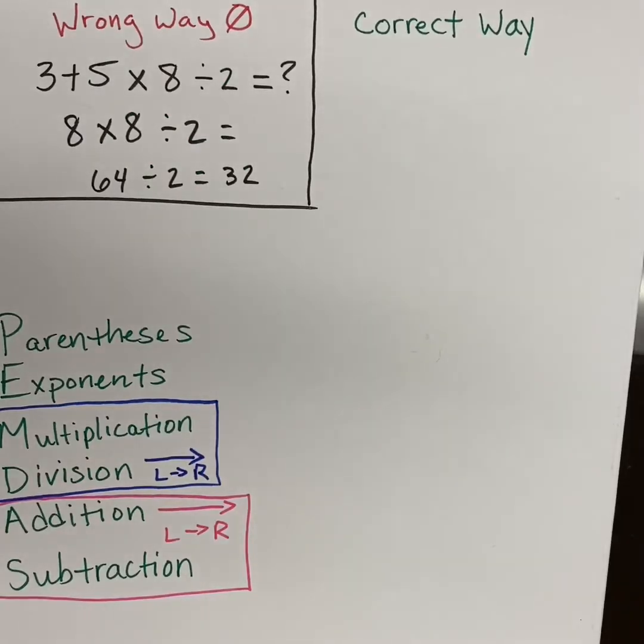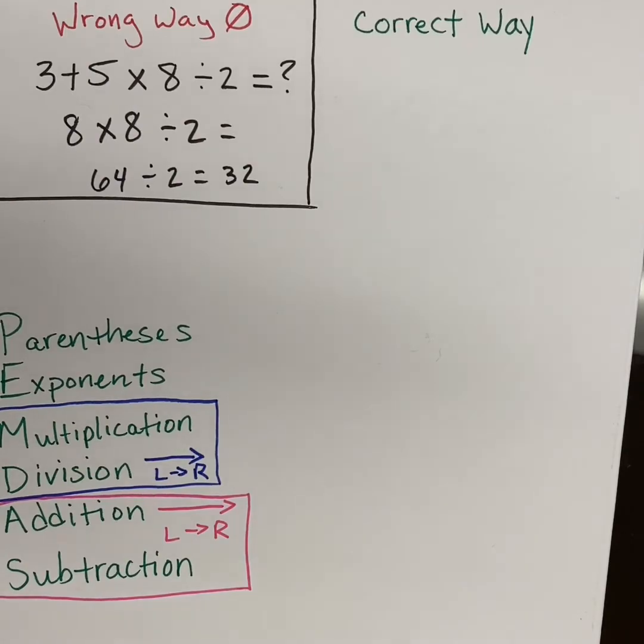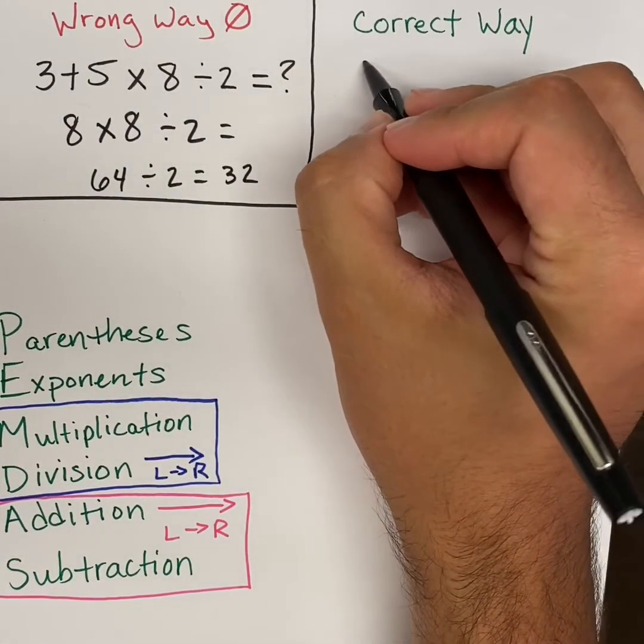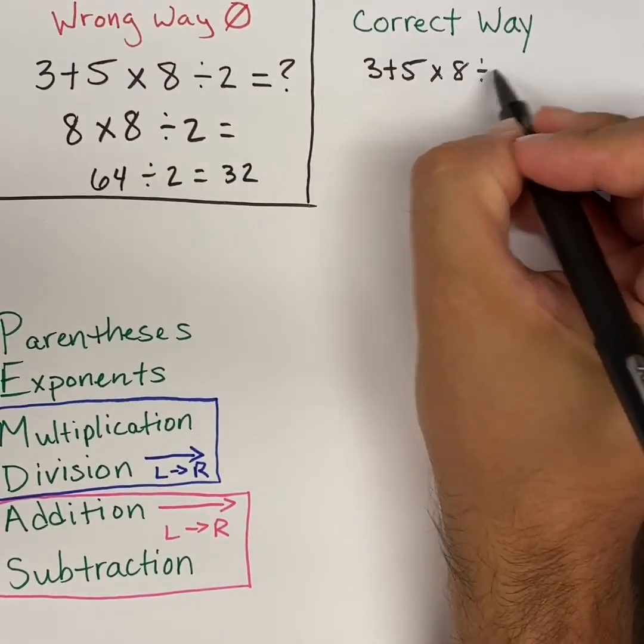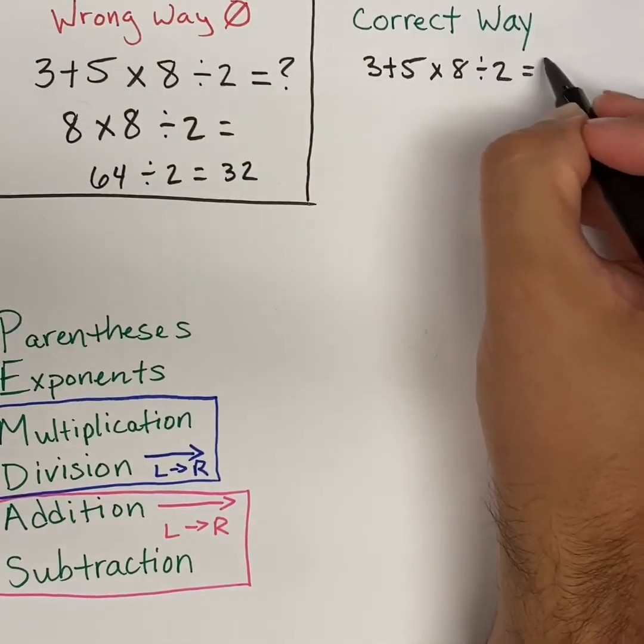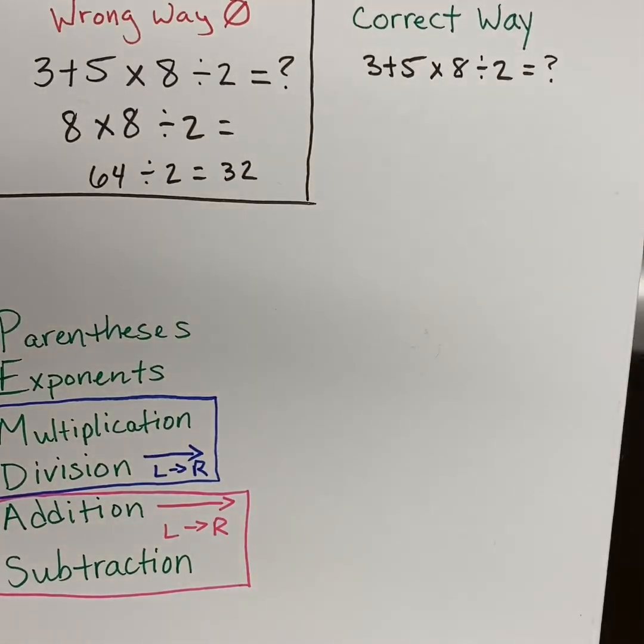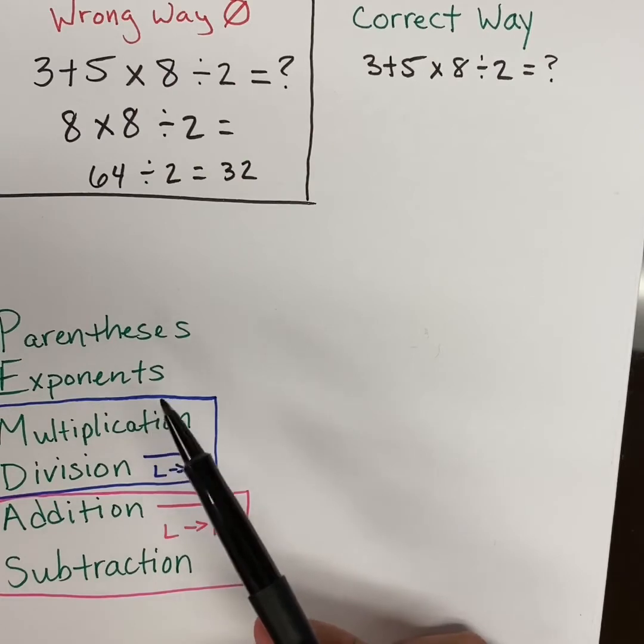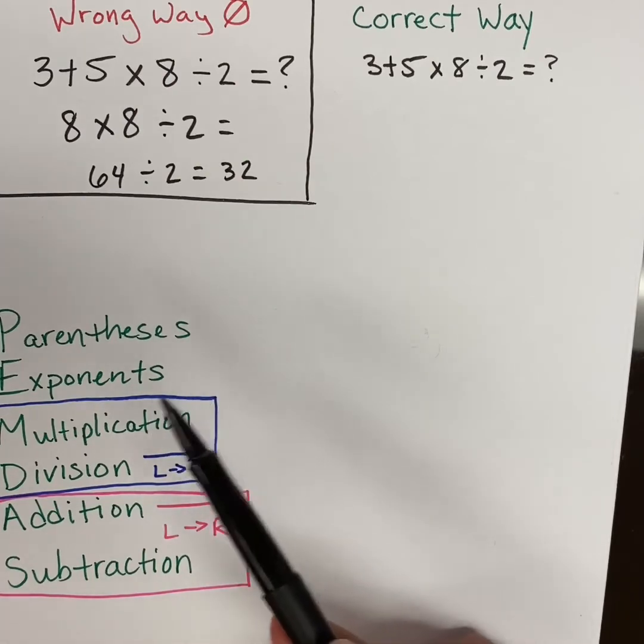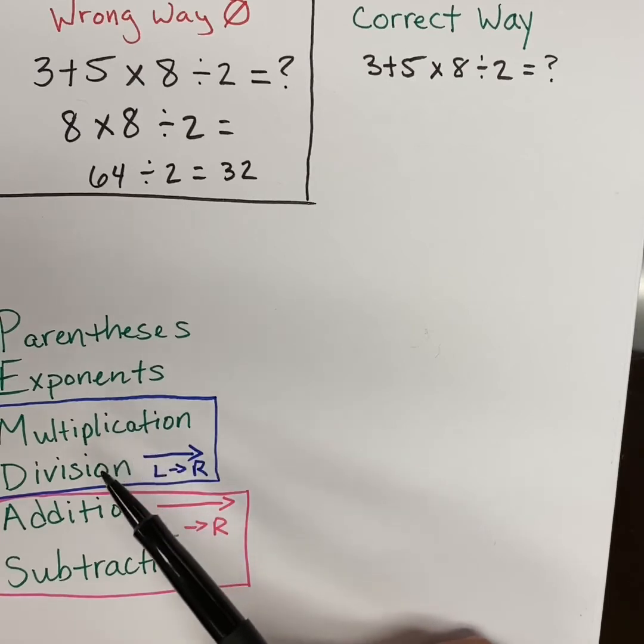So let's go ahead and work through this problem. Remember, we're not going to rewrite it. We're going to keep it the way that it was. So 3 plus 5 times 8 divided by 2 is equal to what? So if we look at our mnemonic device, please excuse my dear Aunt Sally. Do we have any parentheses? No, there's none. Are there any exponents? No, there's none. We move to multiplication and division.